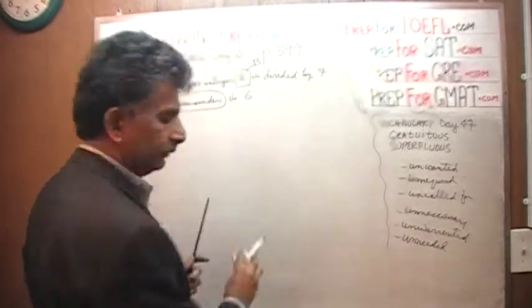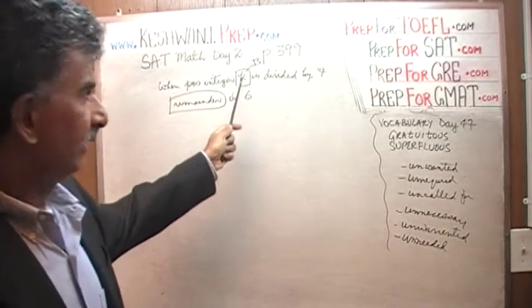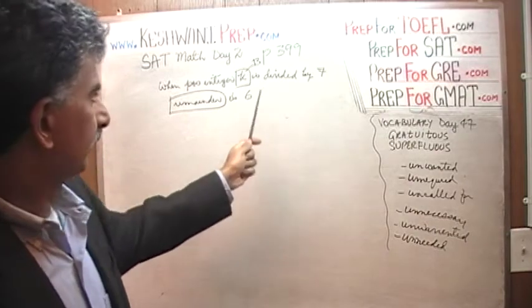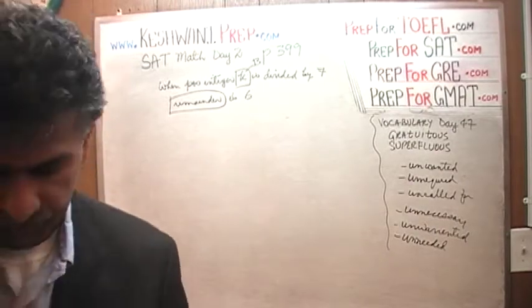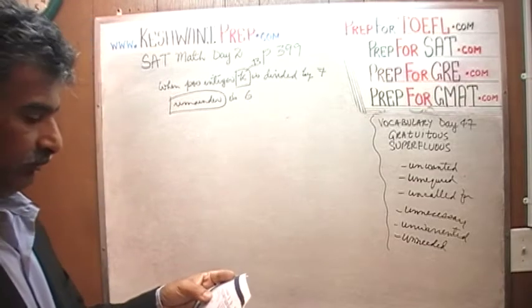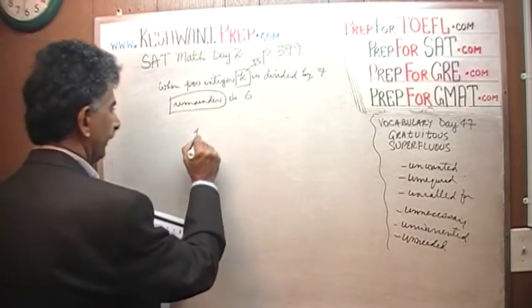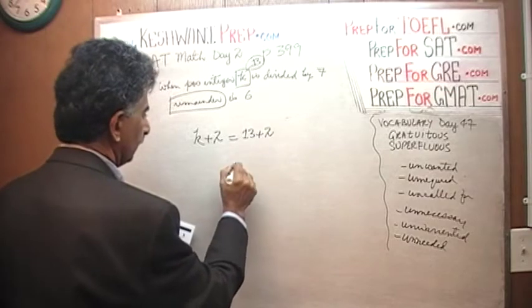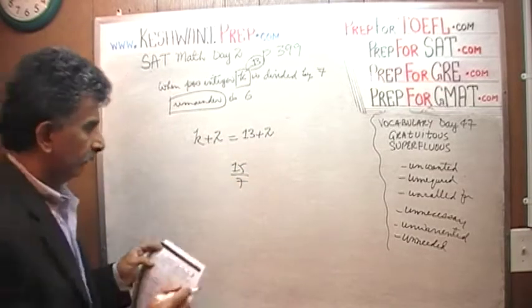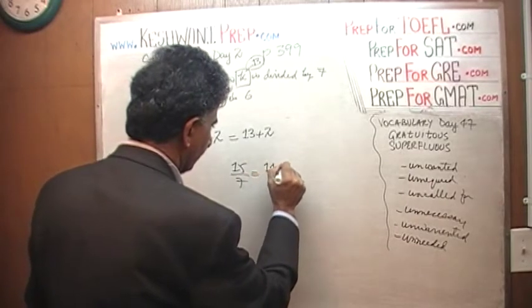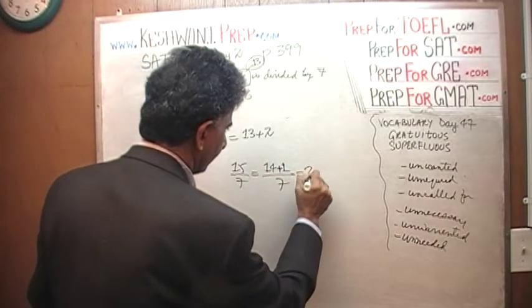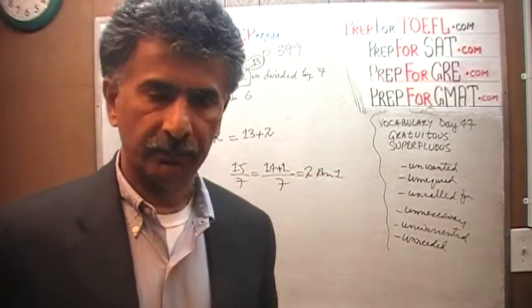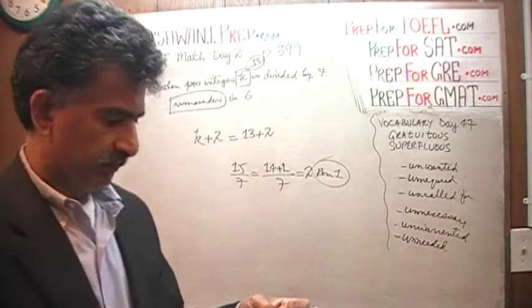So now it reads, we're going to replace K with 13. Now it reads, when a positive integer of 13 is divided by 7, the remainder is 6, which is true. The question simply is, what's going to be the remainder when you divide K plus 2 by 7? K plus 2 would be 13 plus 2, which is 15. 15 divided by 7 is same as 14 plus 1 divided by 7, which of course is just 2, remainder 1. 15 divided by 7 will have a remainder of 1. That's it. That's your answer. Answer is B.